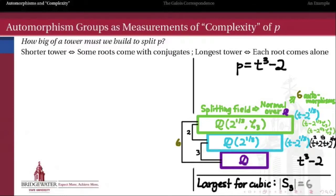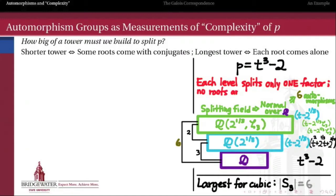Since the total degree is 6, there are 6 automorphisms of this splitting field over Q. That is the largest number of automorphisms we can have, because every automorphism group of an nth degree polynomial will be isomorphic to a subgroup of the symmetric group on n symbols — since every automorphism of the splitting field will induce a permutation of the roots. So the Galois group of this polynomial must be all of S3. That happened because at each level of this tower, we only get one additional root at a time. None of the roots arrive with their conjugates, with the exception of the last extension, which splits the irreducible quadratic into two linear factors, as guaranteed by the conjugate roots theorem.